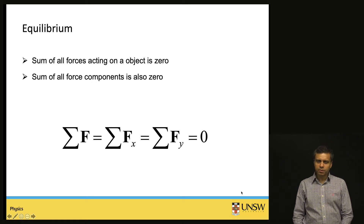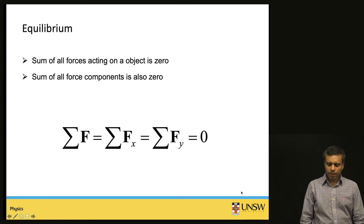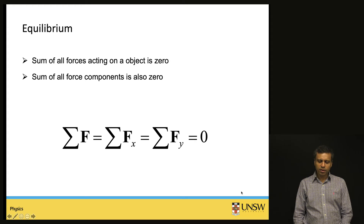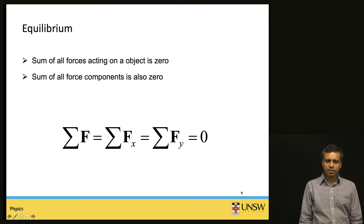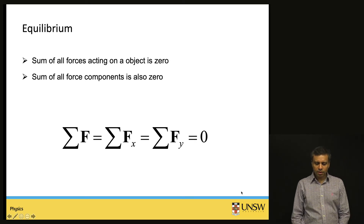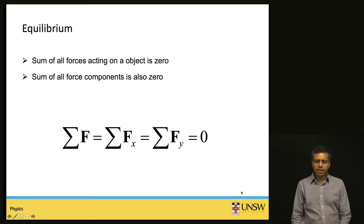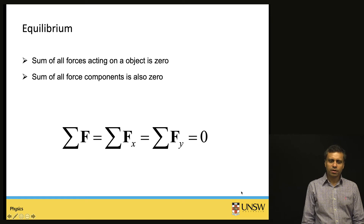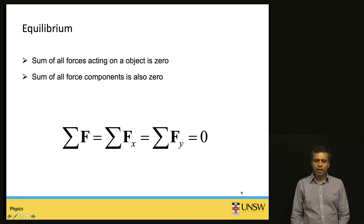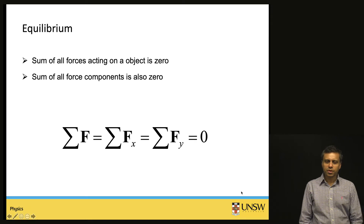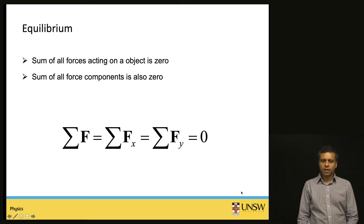This brings us to the definition of equilibrium. When the sum of all the forces acting on an object is zero, we say the object is in equilibrium. This also applies to each of the individual components — for an object to be in equilibrium, the sum of all the forces along each of the x and y components has to be independently zero.